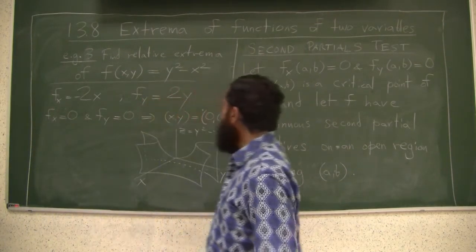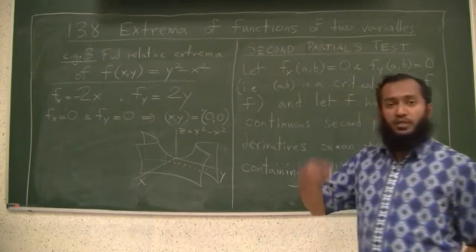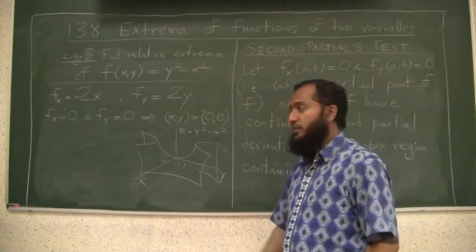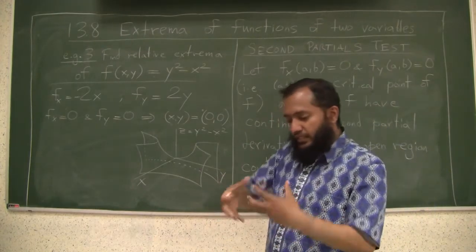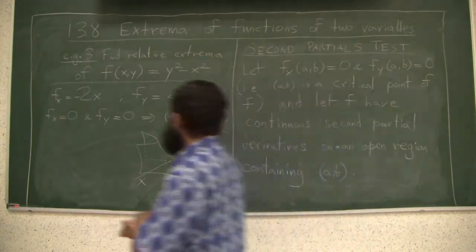We saw two examples of how we found relative extrema of functions by finding partial derivatives, finding critical points, checking the critical points and trying to do analysis like is it a local minimum, local maximum. Let's do one more example.